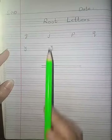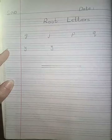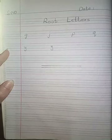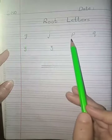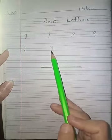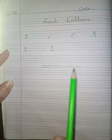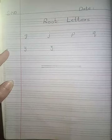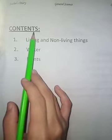After writing grass letters, go to the next page and write root letters. Root letters are the letters which we write in the last three lines — like g, j, p, q, y, z. Draw a finishing line after writing root letters.